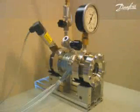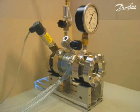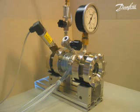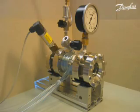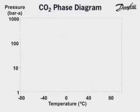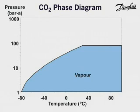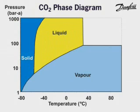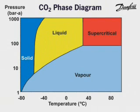In order to observe the CO2 phase changes, an observation cell specially designed and constructed by Danfoss has been used. The cell is designed to withstand pressures up to 140 bar gauge. In this diagram, the coloured areas define the temperature and pressure limits at which the CO2 vapour, liquid, solid and supercritical phases exist. This is known as the temperature-pressure diagram, or phase diagram, for pure CO2.